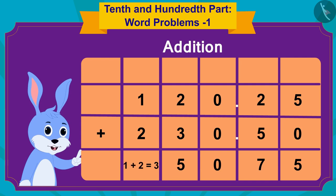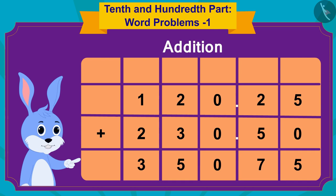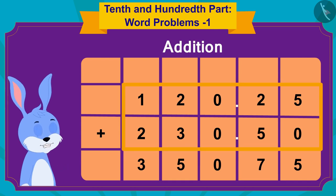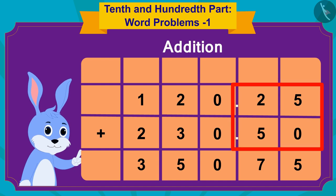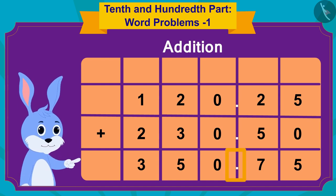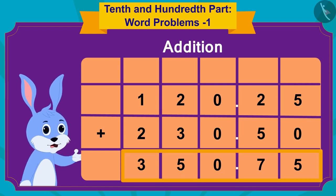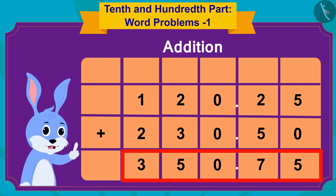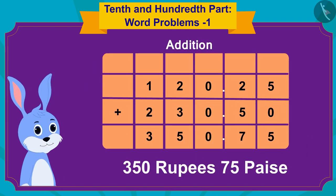This gives 35075. Now, because both these numbers have two digits after the decimal point, I will write a decimal point in the answer in this way. Oh wow! I now have a total of 350.75, or 350 rupees 75 paise.